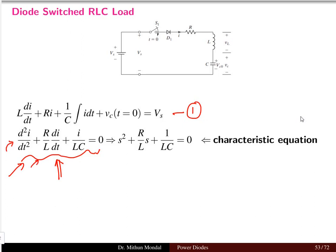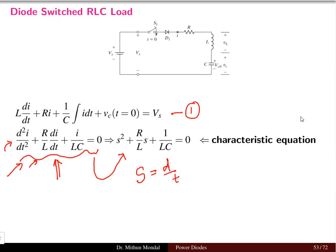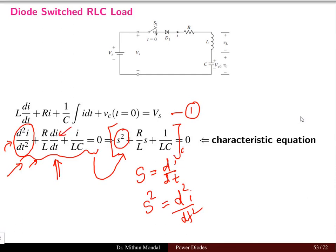This second order differential equation can be converted into Laplace form where S represents D/dt. So d²i/dt² becomes S², and we take I common. The term di/dt becomes (R/L)·S, where S is an indicator of di/dt, plus 1/LC. This is known as the characteristic equation of the second order differential equation.